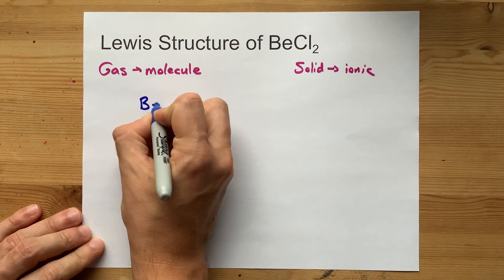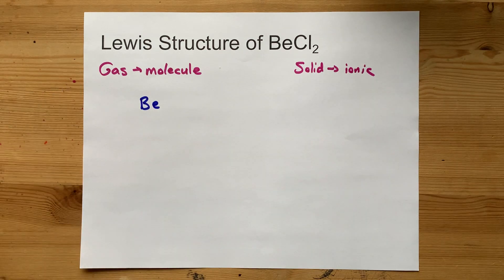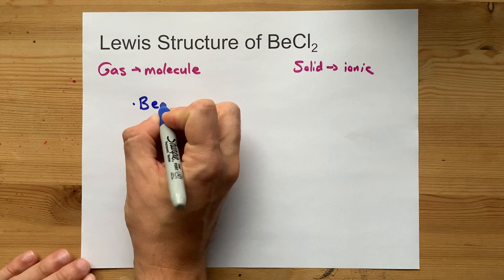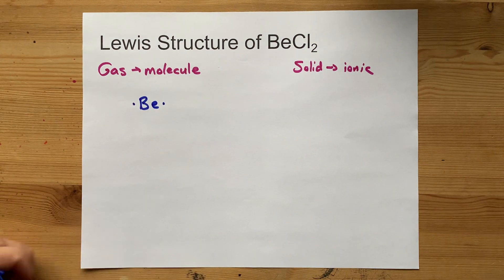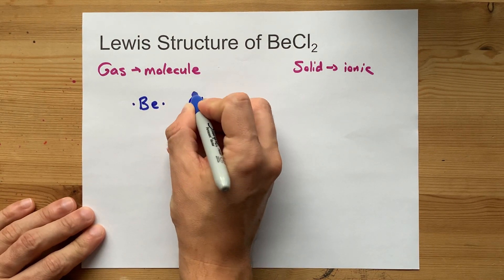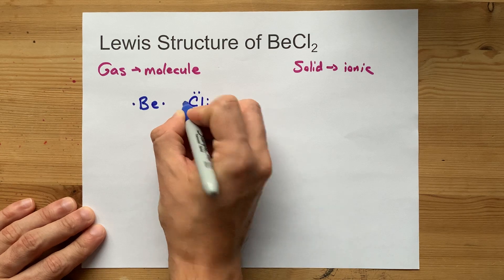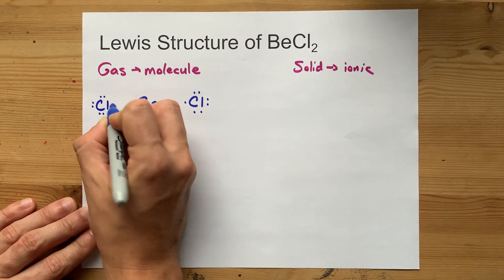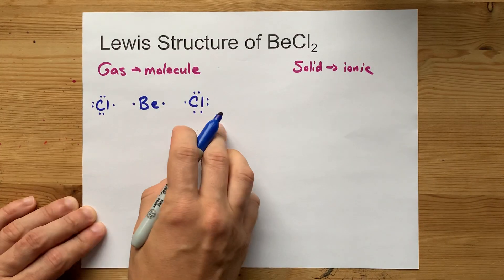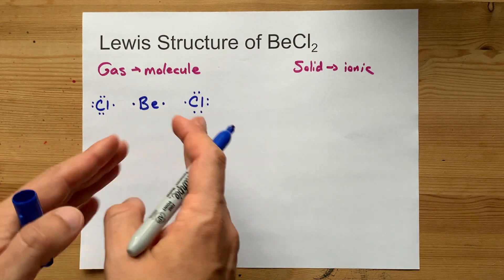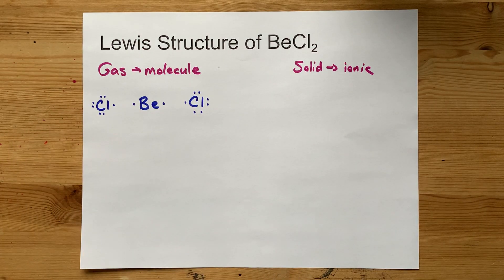Beryllium is in the second column of the periodic table — one, two, second column — so it has two valence electrons. Chlorine is in group 17 and brings seven valence electrons to the plate. This is the Lewis diagram for each of the atoms separately.